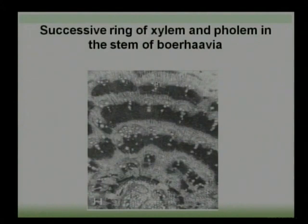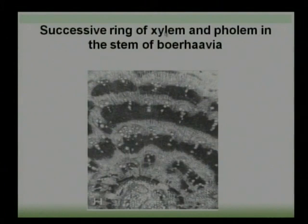A number of growth rings are present due to the activity of extra cambium rings — the first ring, second, third, fourth, etc. These growth rings indicate anomalous secondary growth, as clearly shown in the diagram.